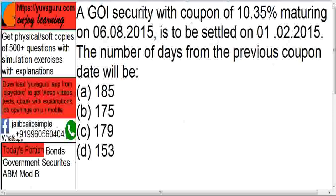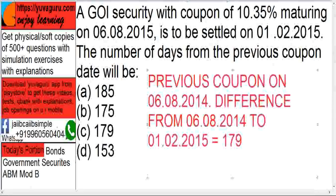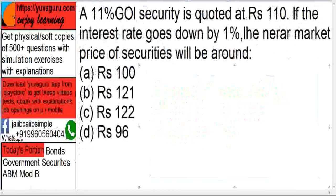It is a yearly coupon bond, so the previous coupon would have been received on 6-8-2014. Now from 6-8-2014 to 1-2015, which is the settlement date, if you count those days, they come out to be 179. So 179 is the answer.